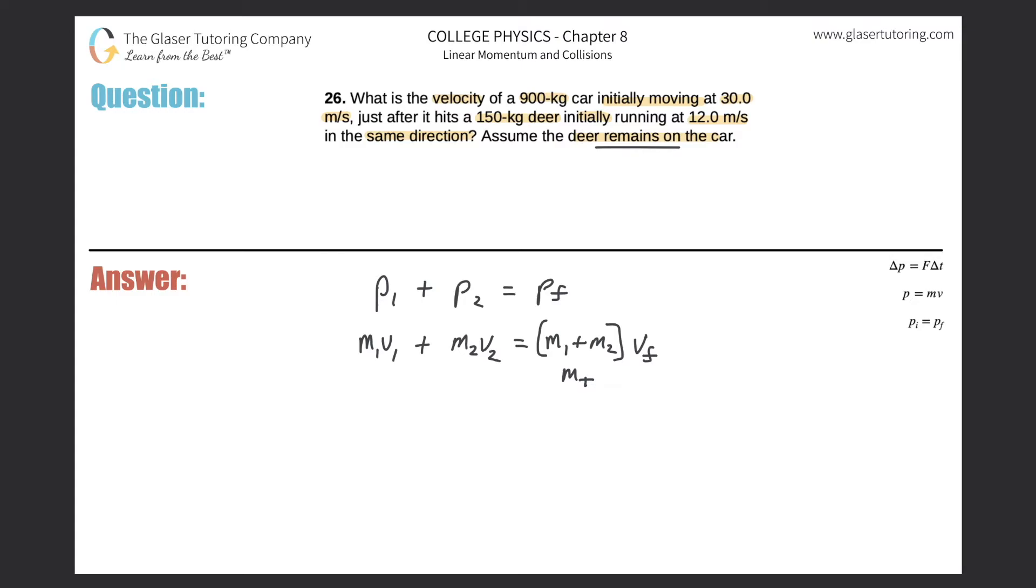So in this case, basically what we need to do again, it wants to know what's the velocity of the car. But remember, the velocity of the car will be the same as the velocity of the deer after the collision. Why? Because they're both stuck together.